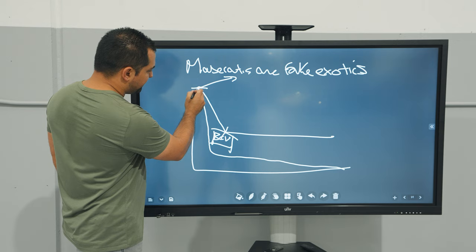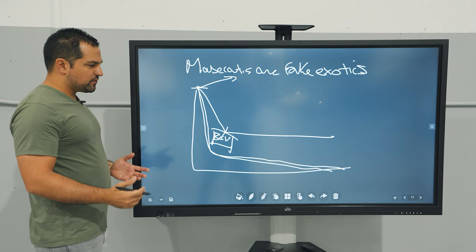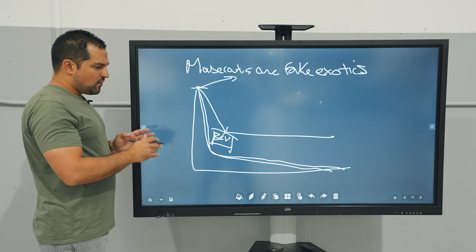One of the reasons I did this depreciation curve in a very steep way is because one of the things that tells us that Maseratis are basically crap is that the dealer network that represents Maseratis also doesn't respect Maseratis enough to buy them back.